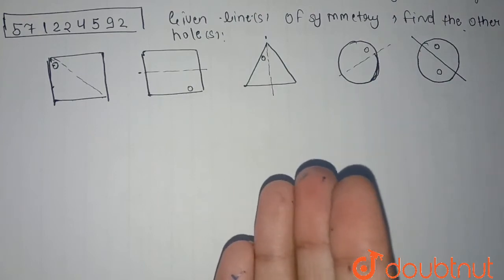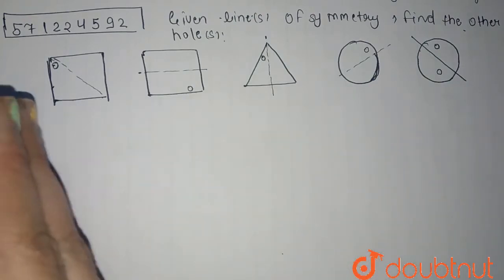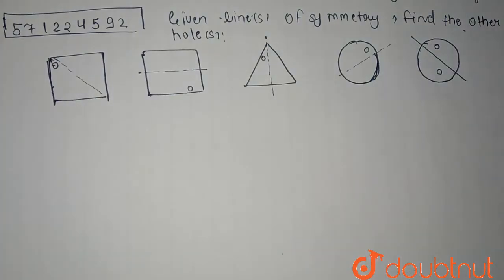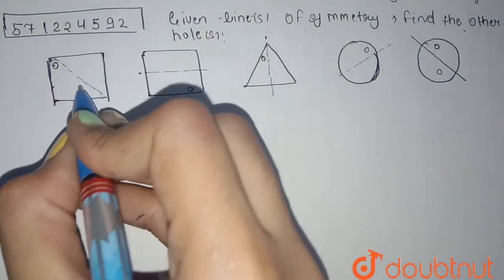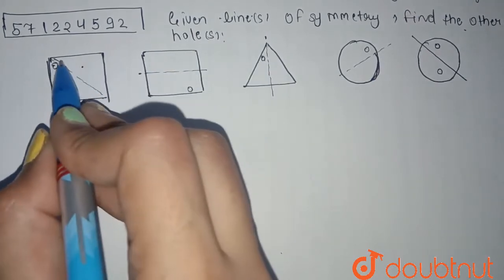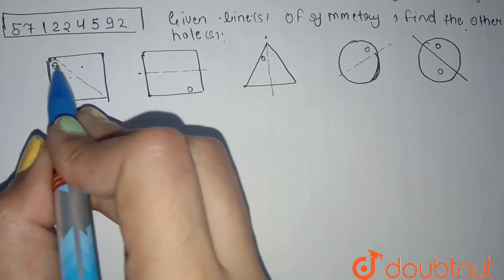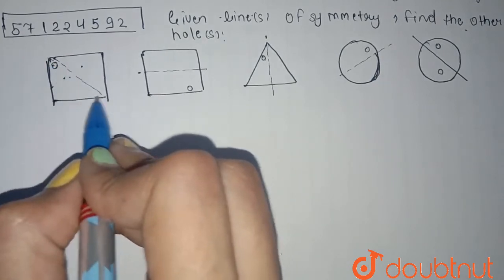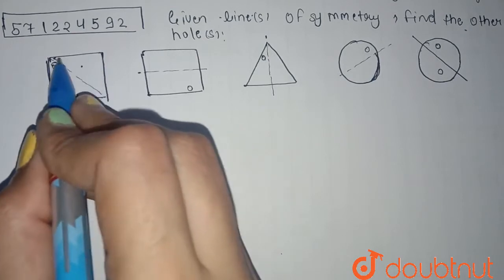a symmetry, symmetry means this part should be equal to this part. This should be the mirror image of this, and this symmetrical line represents as a mirror. So think for yourself, if you place a mirror